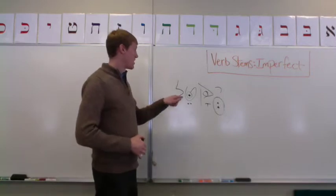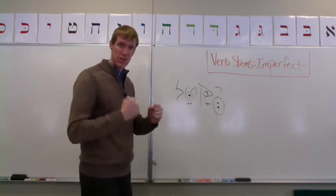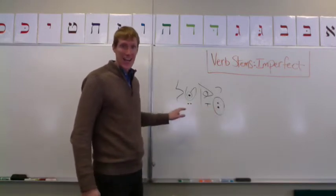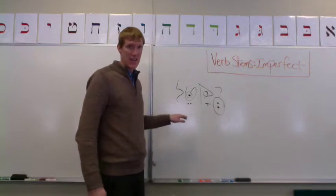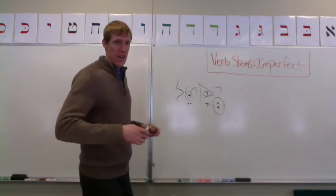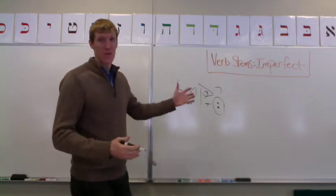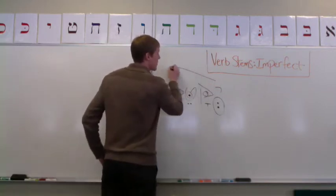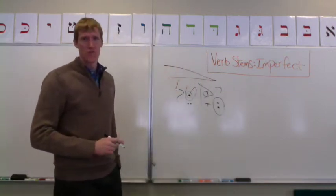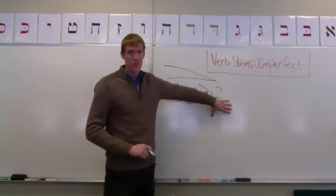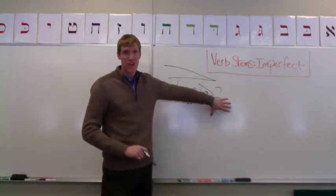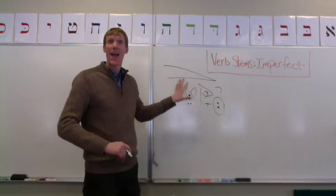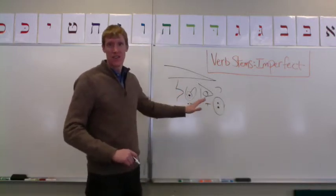as opposed to a dagesh forte in the initial root letter. So Piel has the dagesh forte in the middle, that doubled dagesh in the middle, and a sheva under the prefix — e-a-e, e-a-e. Another way you could think of it is that even the pronunciation of the Piel imperfect has within it a kind of intensity, in that the pronunciation is a sort of crescendo, beginning with a very, very small vowel — e, the sheva — and building to a long tsere: e-a-e, yekattel, yekattel.